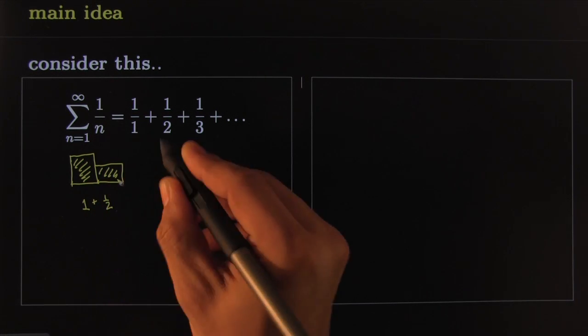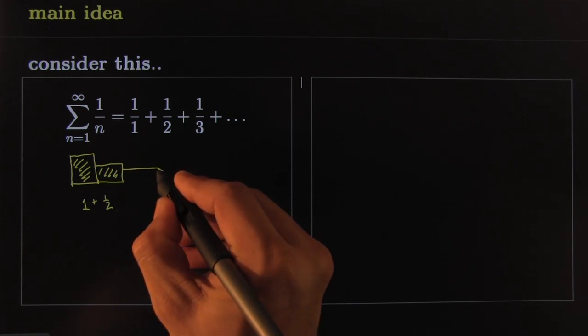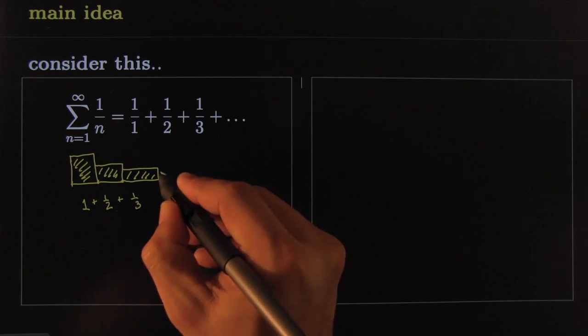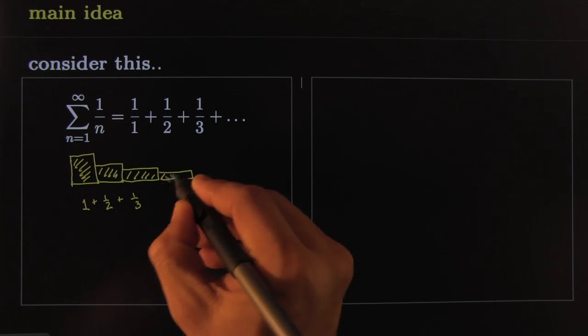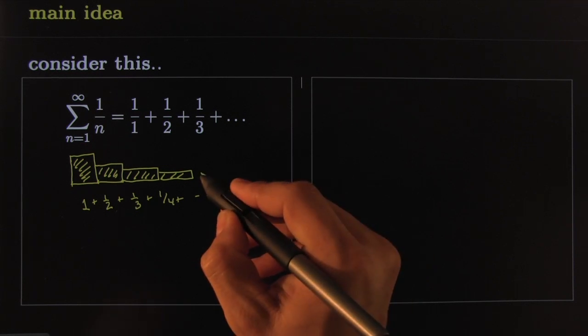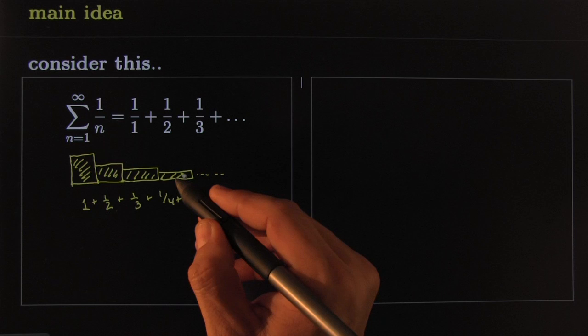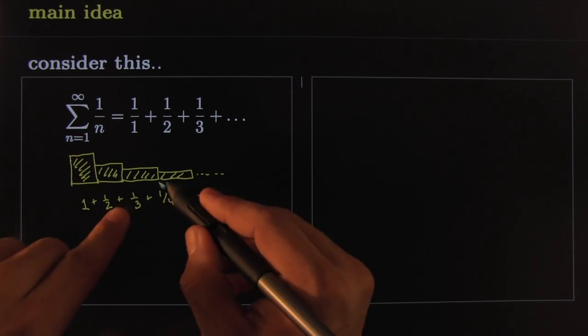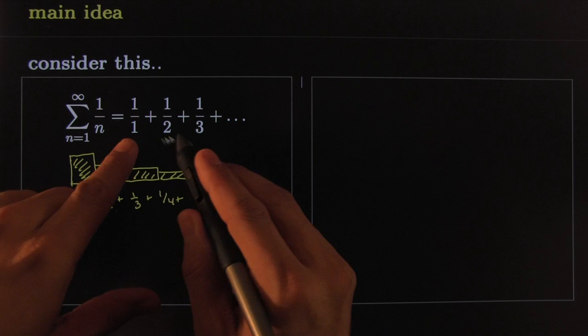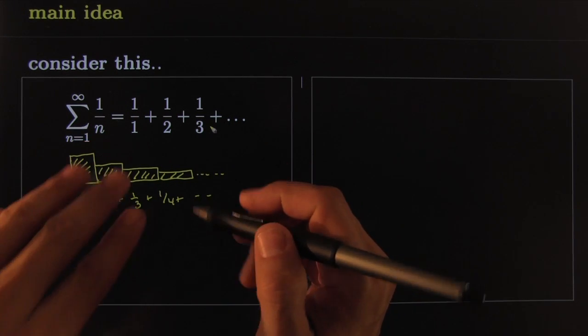This one of course would be a third, and so you could represent it with a third of a block, and so on and so forth. So this total sum could be represented by this area. The area of these blocks and portions of blocks is exactly the same as that number, whatever number that may be, if it's in fact a number.